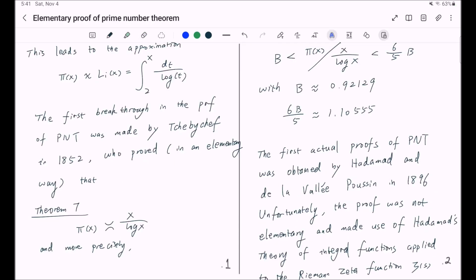So far, we have proved the Chebyshev theorem, which states that π(x), the number of prime numbers less than or equal to x, is asymptotically x divided by log of x, up to a constant.